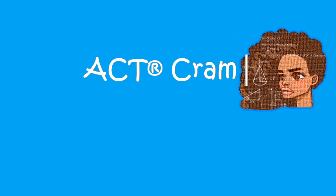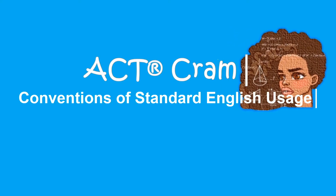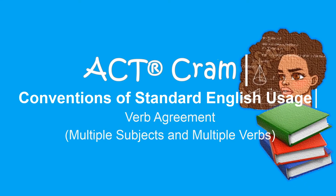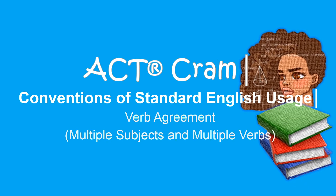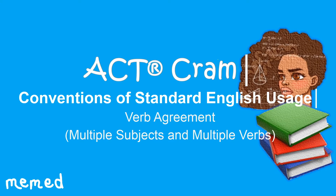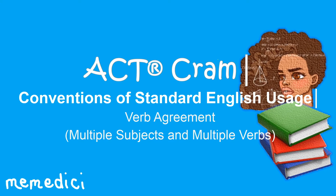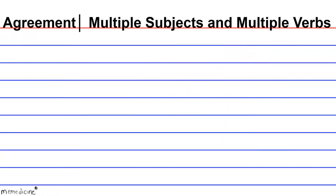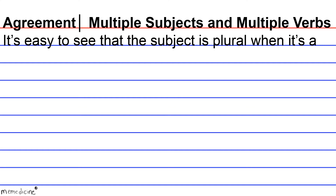ACT Cram: Conventions of Standard English Usage — Verb Agreement: Multiple Subjects and Multiple Verbs. It's easy to see that the subject is plural when it's a plural noun.